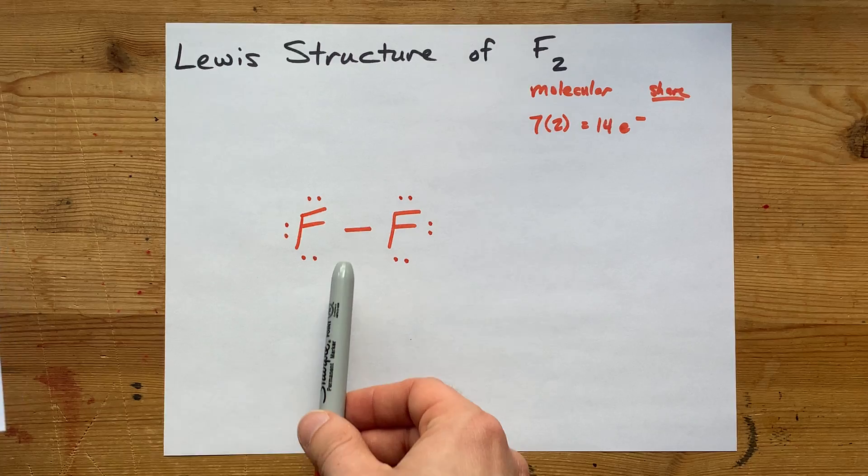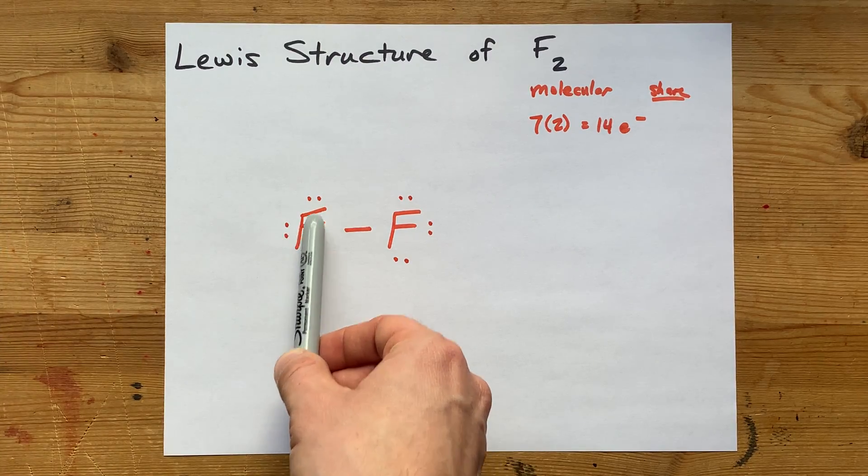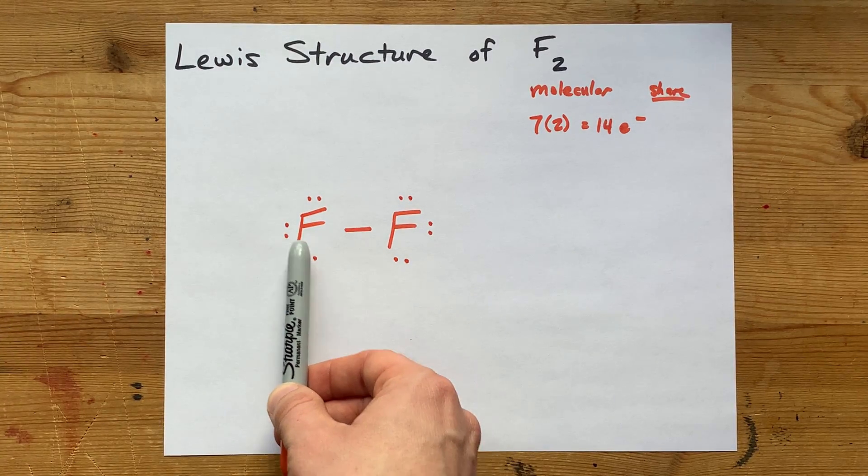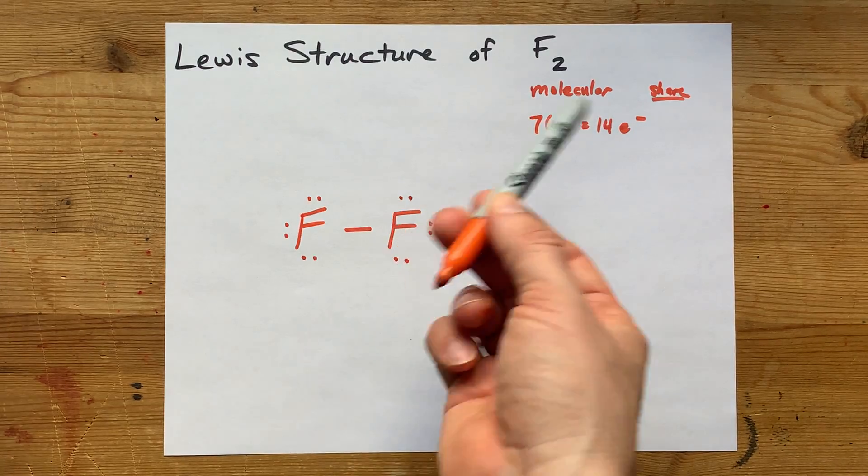Luckily for me, it looks like this fluorine already has a completed octet. 2, 4, 6, 8. Yeah, it does. This fluorine, 2, 4, 6, 8.